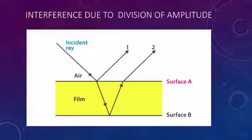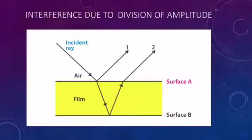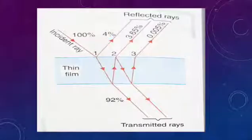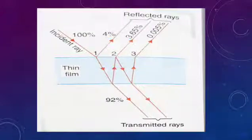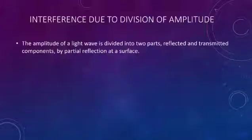A light ray is incident on a boundary. At the boundary, it is reflected — the reflected light ray is ray 1. The refracted ray is ray 2. The same light ray is thus split. This method is called division of amplitude.